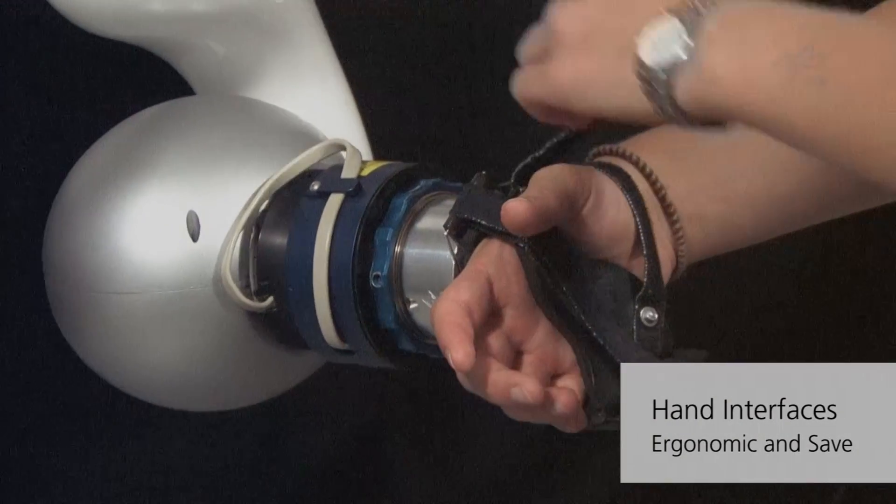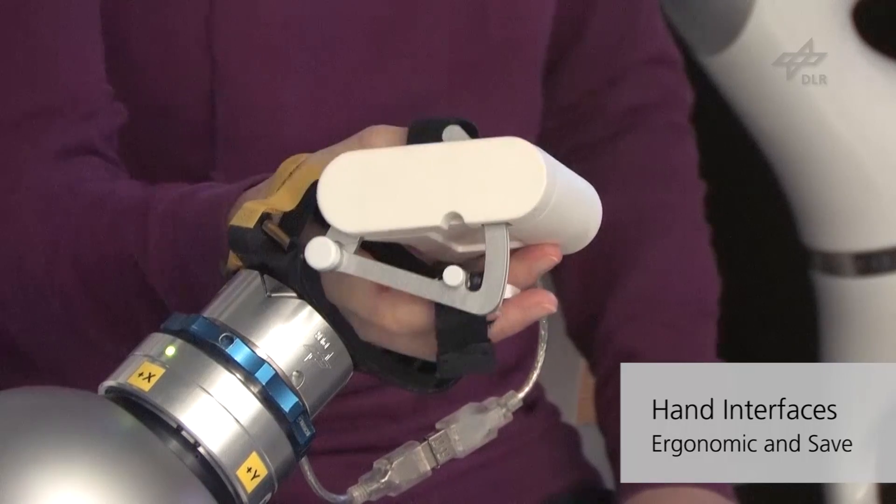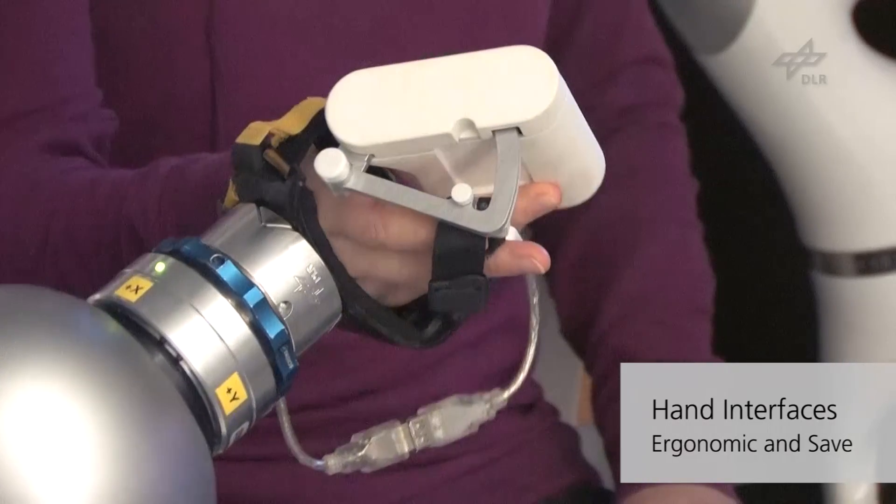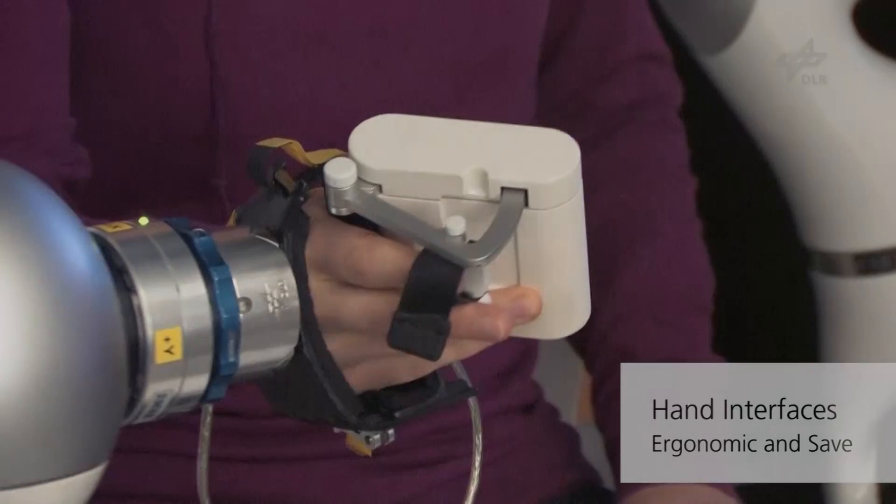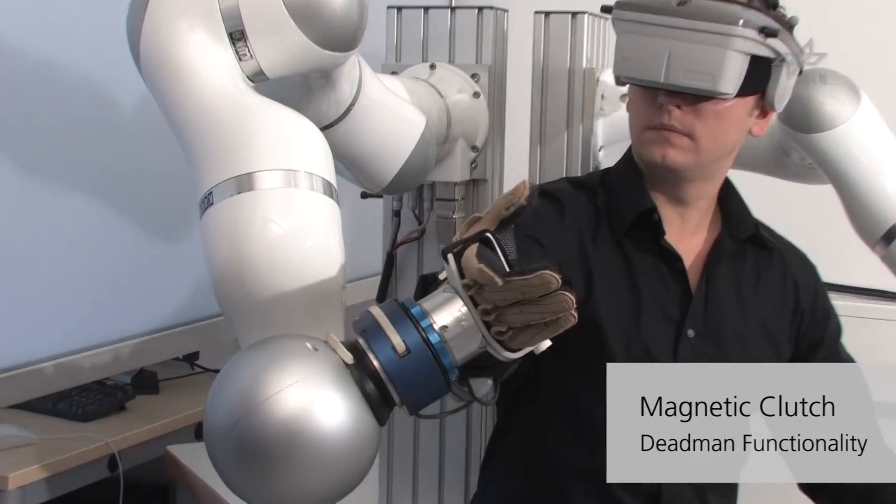We can operate with a bare hand coupled to the end effector or with several hand interfaces such as the one degree of freedom force feedback interface shown here. The hand interfaces are magnetically attached to the robots.